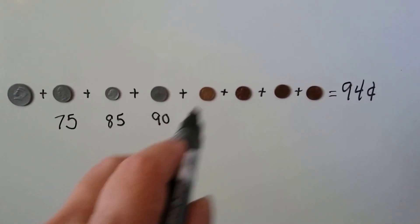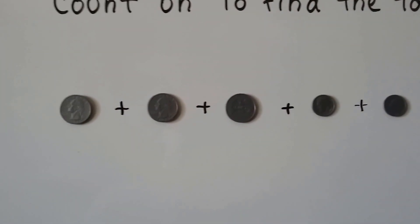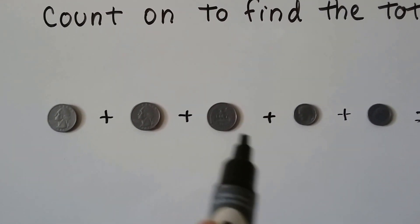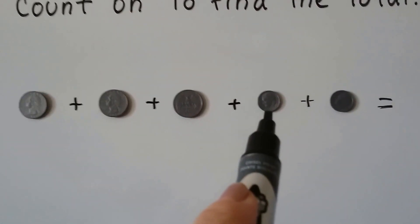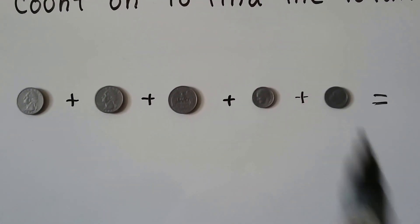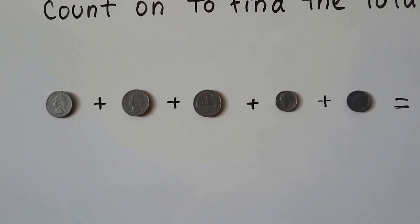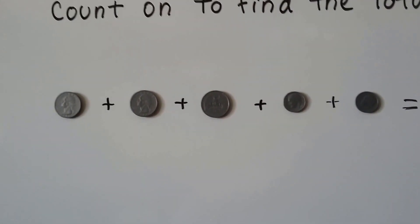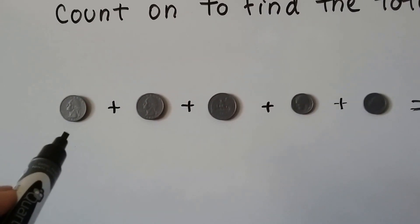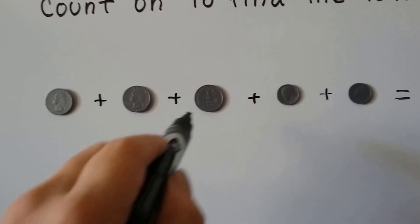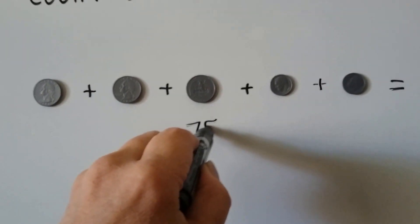Just count on and slowly add them up. Here we have three quarters and two dimes. We skip count by 25s: 25, 50, 75. Now we're at 75.